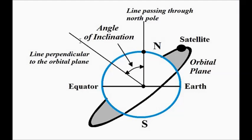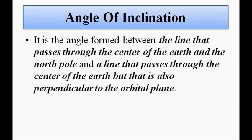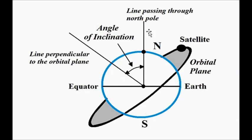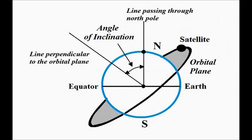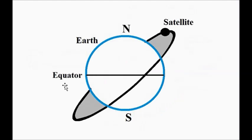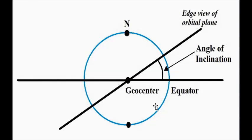Both these angles — from the first and second definitions — are of the same value. There are simply two ways of defining the same thing. To summarize: the first definition is the angle between the line through the geocenter perpendicular to the orbital plane and the line through the north pole and geocenter. The second definition is the angle between the edge view of the orbital plane and the equator.